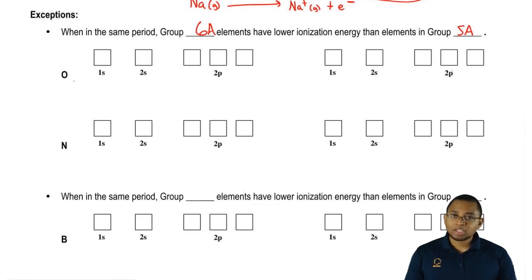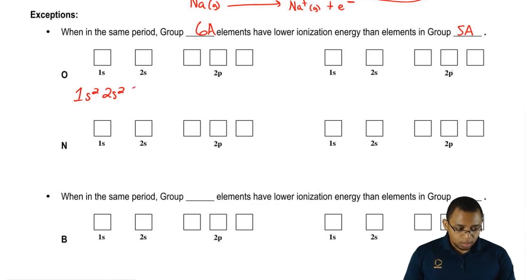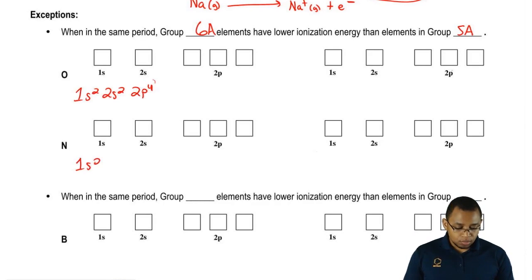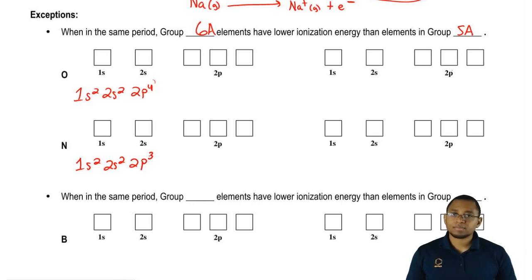Oxygen's electron configuration would be 1s2, 2s2, 2p4, and nitrogen would be 1s2, 2s2, 2p3.